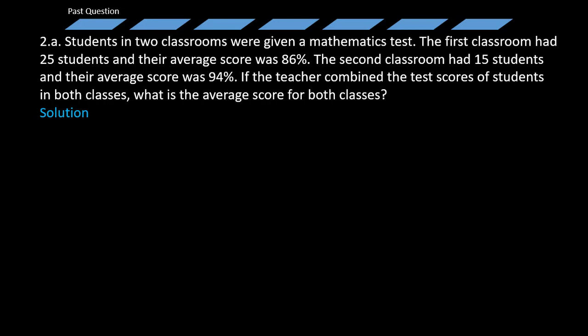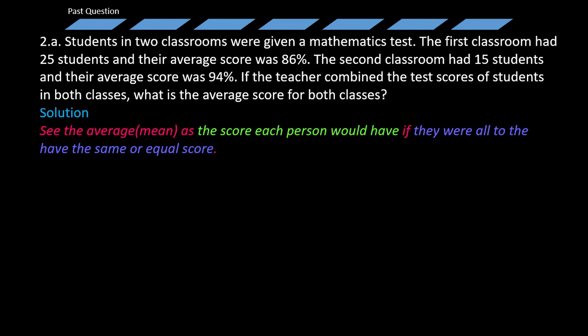The mean refers to the score each person would have if they were all to have an equal score. Let me repeat: see the average or the mean as the score each person would have if they were all to have the same or equal score.